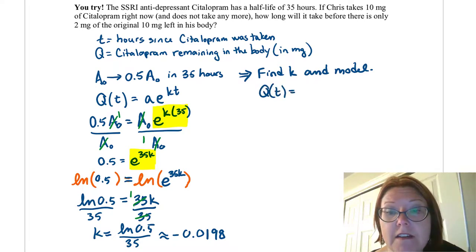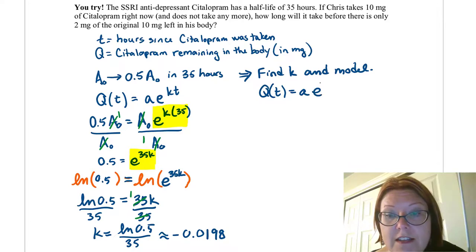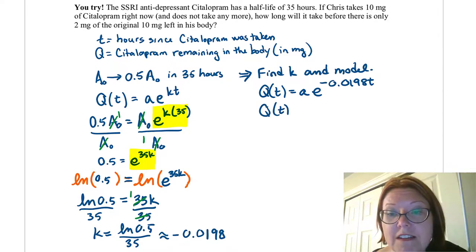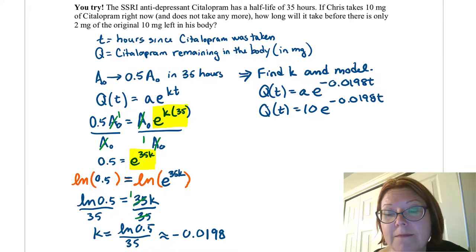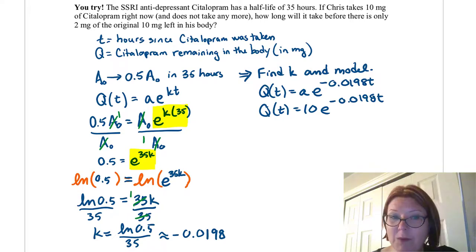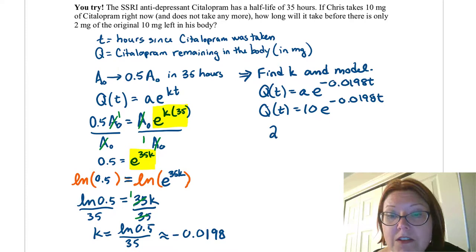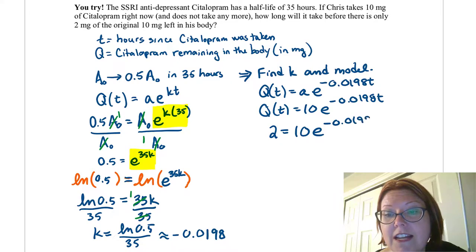Now we can write the model for citalopram leaving the body: Q of t equals lowercase a times e to the negative 0.0198t. Since Chris takes 10 milligrams of citalopram, we insert that as the initial amount: Q of t equals 10 times e to the negative 0.0198t. Our question is how long it will take before there are only 2 milligrams left, so that's the final amount. We replace Q of t with 2, giving 2 equals 10 times e to the negative 0.0198t.